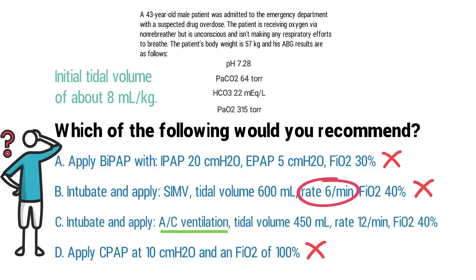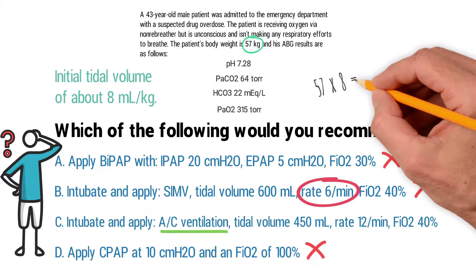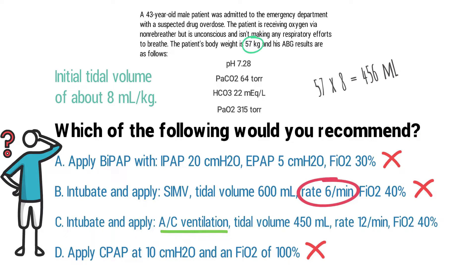The question gives us the patient's body weight of 57 kilograms, so we can calculate 57 multiplied by 8, which gives us 456 milliliters. That is close to the tidal volume given in the answer choice, which tells us that this tidal volume setting is appropriate. Regarding the FiO2, the patient has a PaO2 of 315 due to being on a non-rebreather — that number is way too high, meaning the patient has been getting too much oxygen.